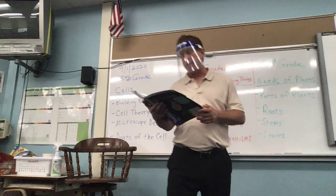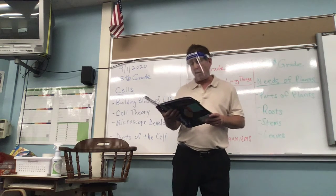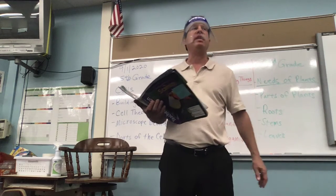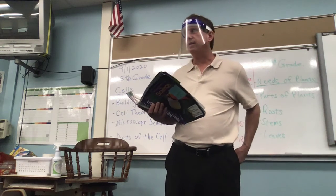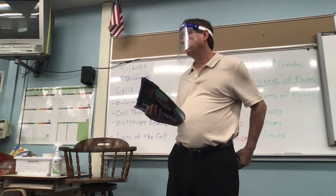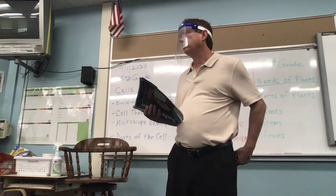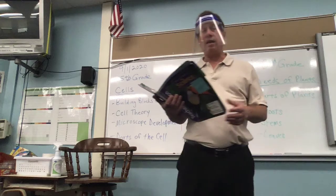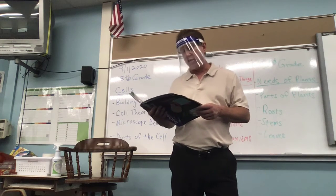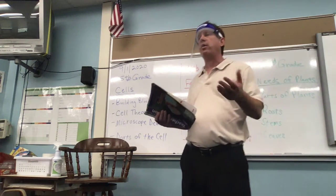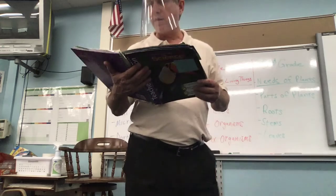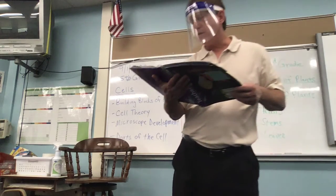Plants have roots that take in water and nutrients and provide support to the plant. A stem holds up the leaves and carries water and nutrients throughout the plant. Leaves absorb sunlight and gases from the air and use them to make food for the plant. So water comes through the roots, up the stem to the leaves, and then the leaves collect sunlight and gases.